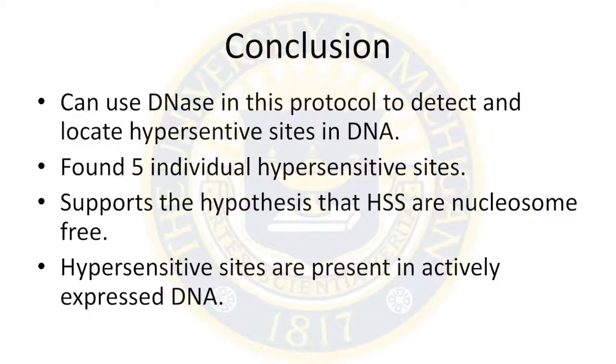Let's briefly go over what we learned from this experiment. We can use DNase to map out hypersensitive sites and its sensitivity. We found five hypersensitive sites within globin gene control region.